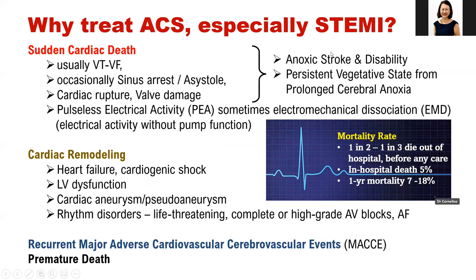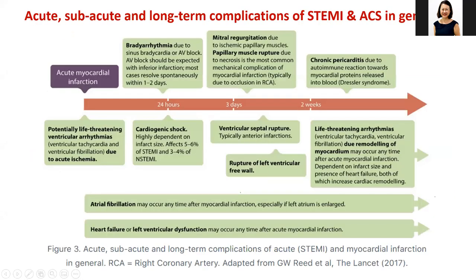Sudden cardiac death can also occur from cardiac rupture, valve damage, pulseless electrical activity, and loss of pump function — leading to anoxic stroke and persistent vegetative state. Following a heart attack with too much muscle damage, you can end up with cardiogenic shock, heart failure, LV dysfunction, aneurysm, pseudoaneurysm, rhythm disorders including complete heart block, AF, VT, VF, and later major cardiovascular or cerebrovascular events. One-year mortality remains high.